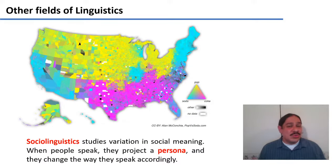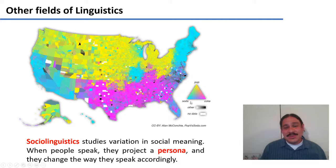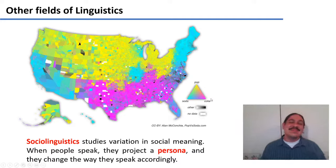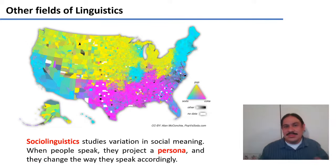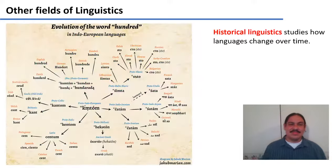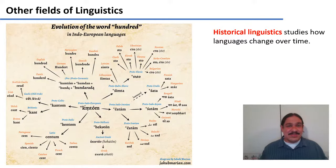We've mentioned sociolinguistics, and this is another presentation of the pop/soda/coke map. Sociolinguistics studies how you project your persona — who you are — into your words and ultimately your language.